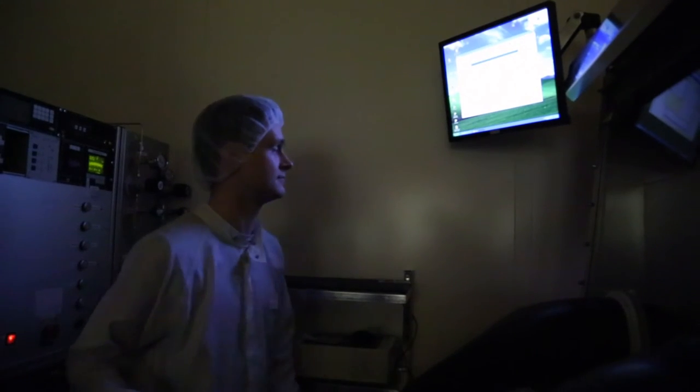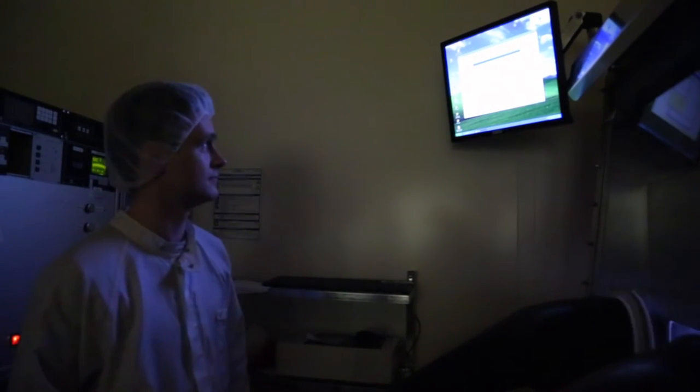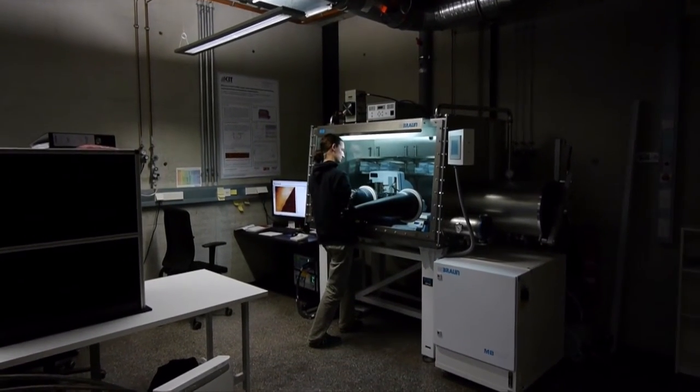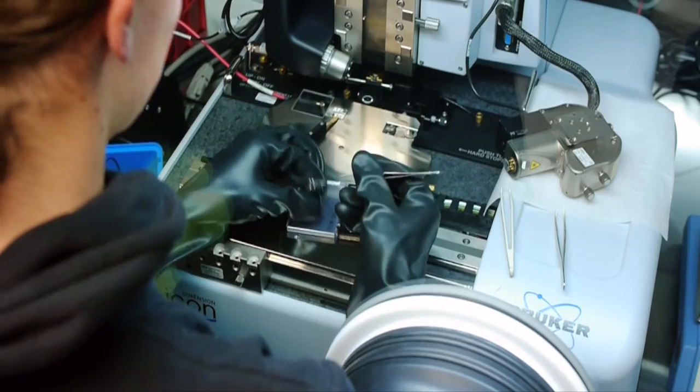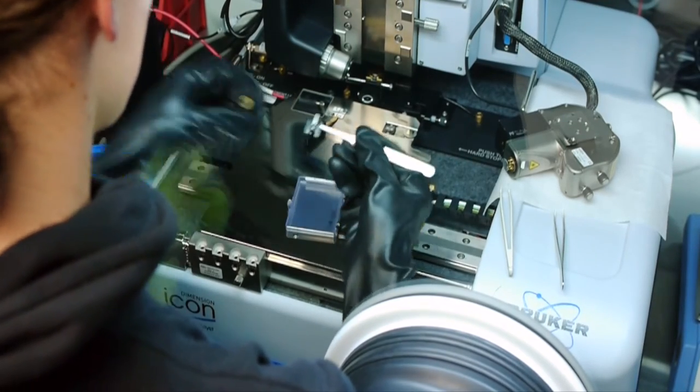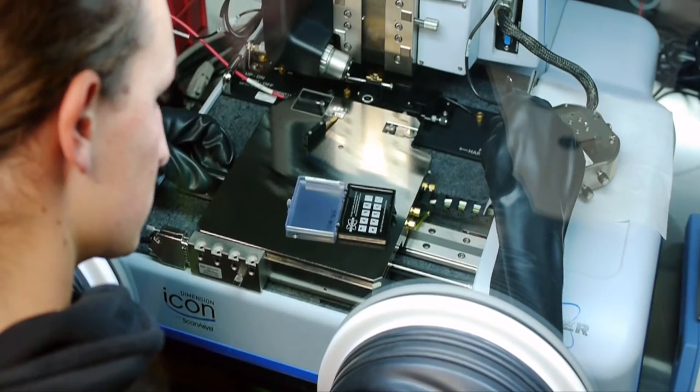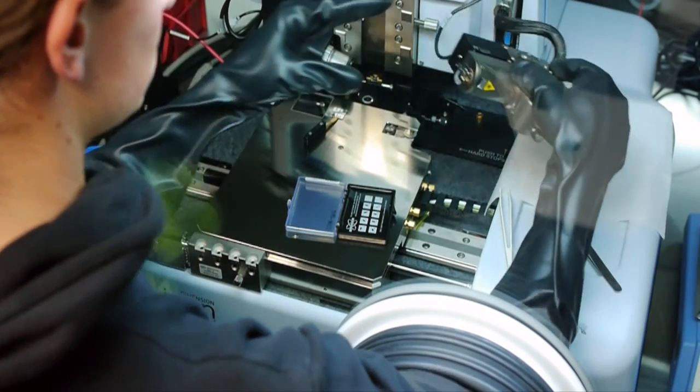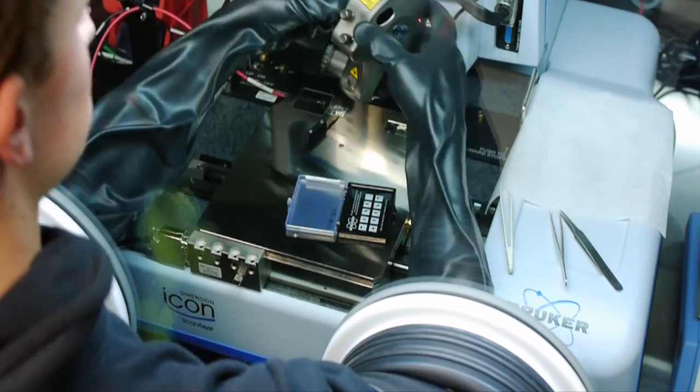Another possibility of analyzing the solar cells and light-emitting diodes is to examine them under an atomic force microscope. Here, the organic semiconductor is again inserted through an airlock into a glove box. After it has been put under a laser, scientist Stefan Reich first has to install the probe tip into the holder and align the laser.